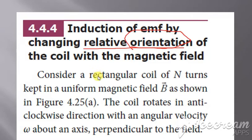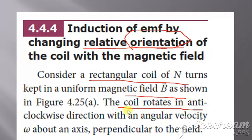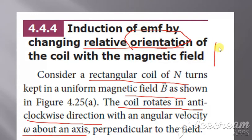For this, let us consider a rectangular coil with N turns placed in a magnetic field B. This coil is being rotated in the anti-clockwise direction with angular velocity omega. Let us consider this rectangular coil which we are going to rotate in the anti-clockwise direction.